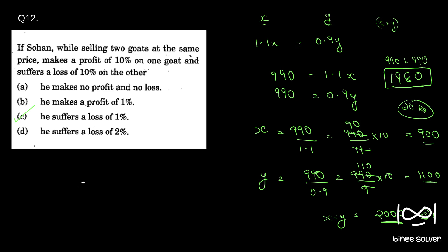So if you assume the original price as 100 and he made 10% on one goat, that means he sold one goat for 110 rupees, and he made 10% loss on another goat, so he sold for 90 rupees.